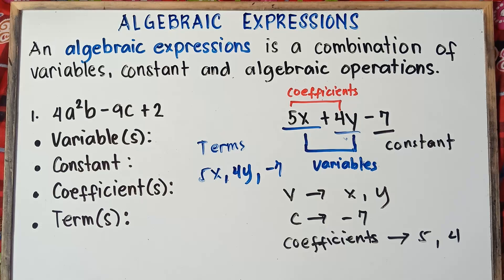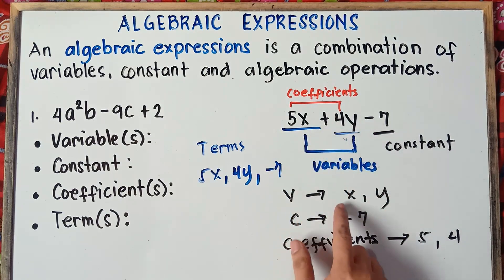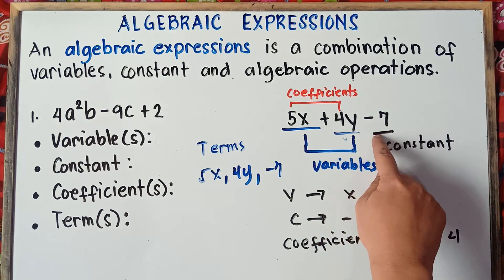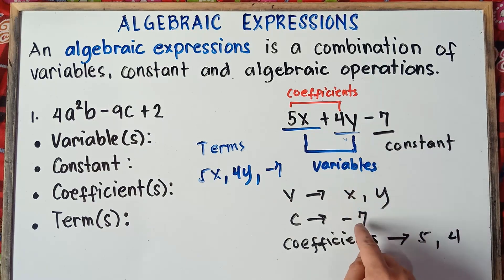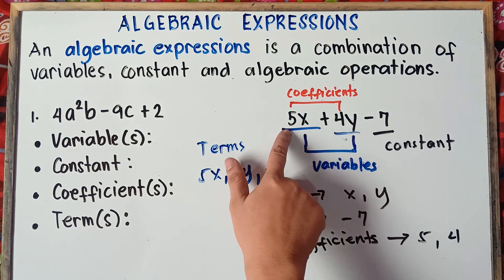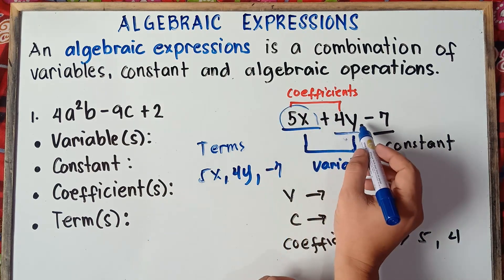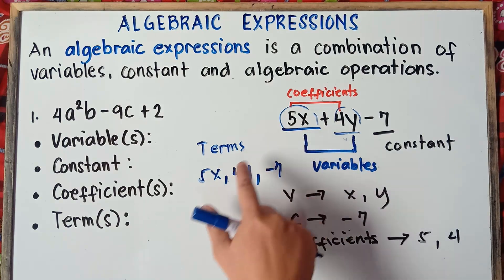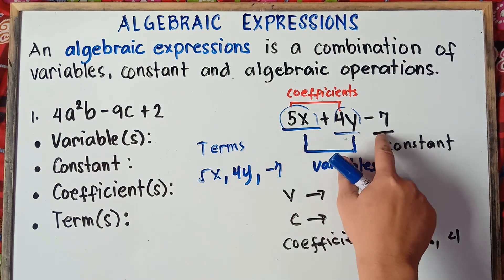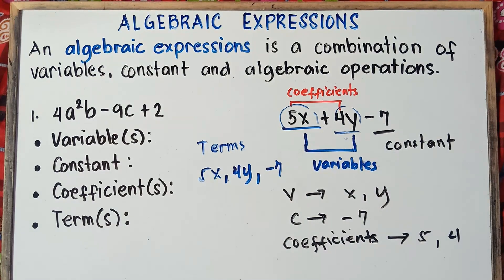So once again: variables are the letters — x and y. Constant is the number alone without the variable — negative 7. Coefficients are the numbers multiplied by the variable — positive 5 and positive 4. Terms are separated by plus and minus signs: first term is 5x, second term is 4y, and third term is negative 7. Include the minus sign.